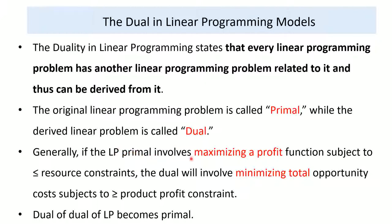Generally, if the primal linear programming involves maximizing a profit — that is, a maximization problem subjected to less-than-or-equal-to resource constraints — the dual will involve minimizing the total opportunity cost, subjected to greater-than-or-equal-to product profit constraints. Importantly, the dual of the dual becomes the primal: when we find the dual of the primal we get the first derived problem, and when we again derive another dual from that dual, we return back to the primal.